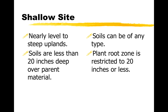The shallow site is the next one. It doesn't matter really what the soil texture is — it could be sand, silt, or clay. A lot of times these shallow sites will have rock outcroppings, rocks sticking out of them. What makes it a shallow site is that there's less than 20 inches of soil over top of what's called parent material — gravel, rock, or shale. The plant zone is restricted to less than 20 inches, which affects the quality of the site and how many plants can grow there.